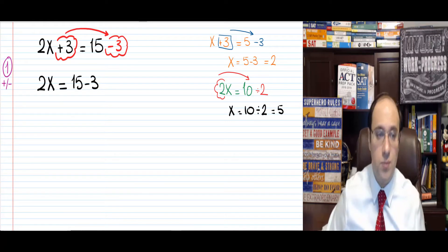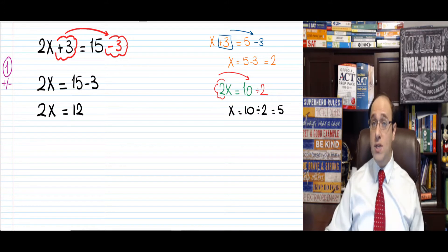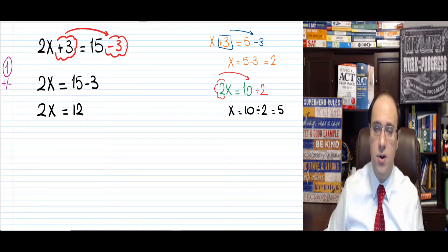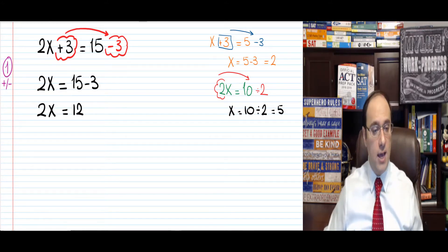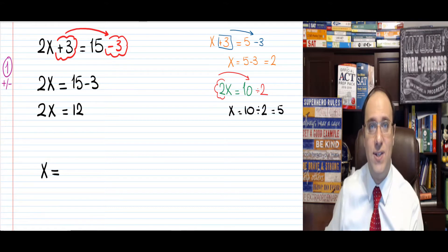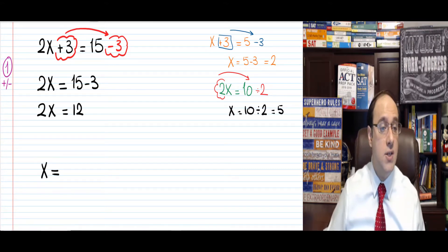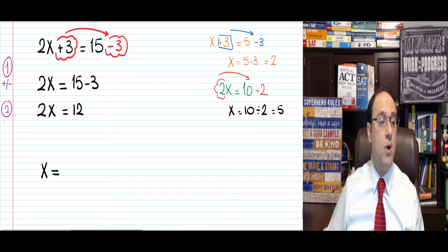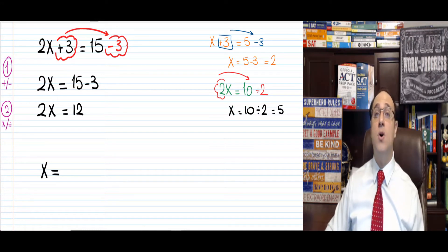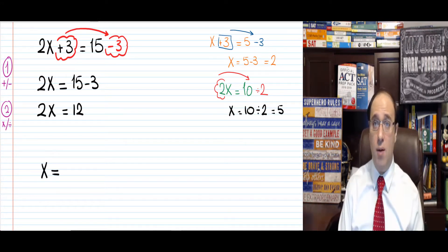Now what do we do? We answer this: 2x equals 12. Are we done? Is the answer 12? No. Remember, your final answer has to be x equals what — I'm trying to find the value of x itself. Now we take this to the second step. The second step is to get rid of the times or divided — any number that is multiplied or divided by the x, the variable I'm looking for.